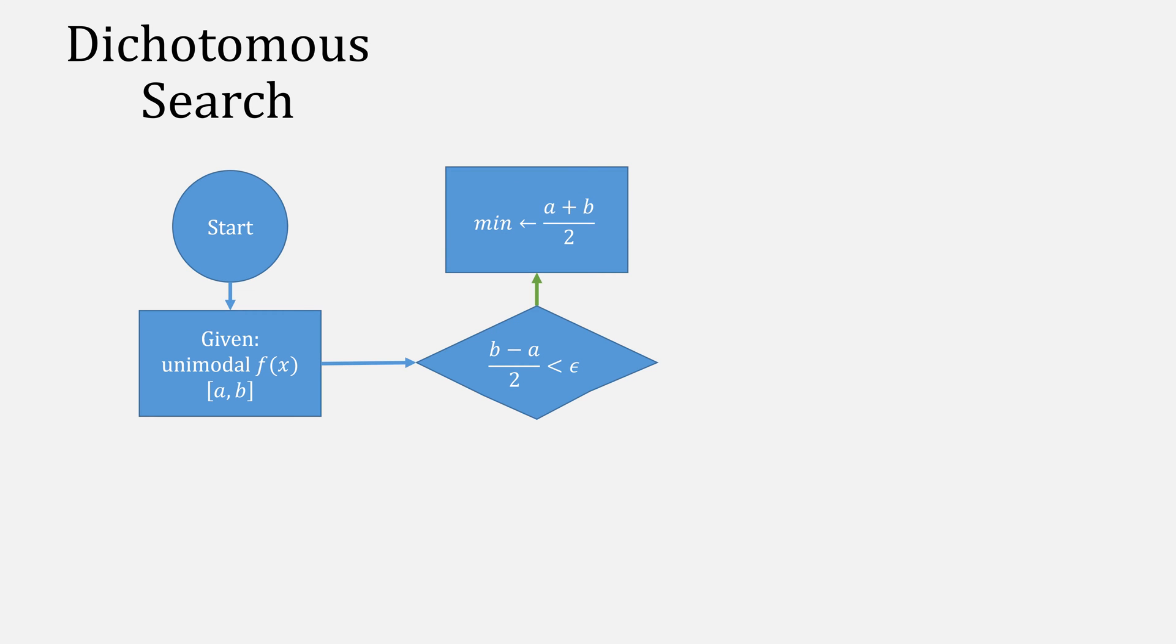The algorithm for dichotomous search will look strangely familiar to those who've seen ternary search. We start with some unimodal function F, and an interval A and B. Then, use our new end condition of B minus A over 2 less than epsilon. Once the case, we've found our minimum of A plus B over 2, and we can stop.